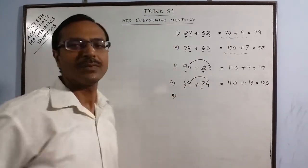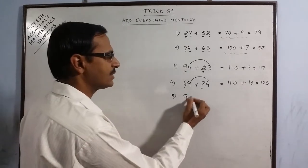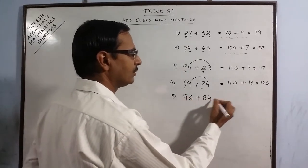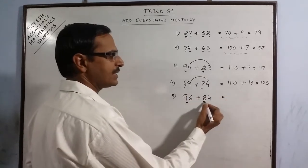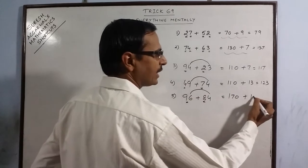More examples. So this way you can go forward and take larger numbers in 96 and 84. See 9 plus 8 is 17. Put 1 0. 6 plus 4 is 10. 180.